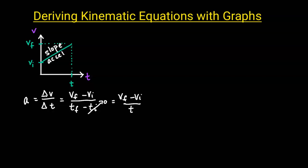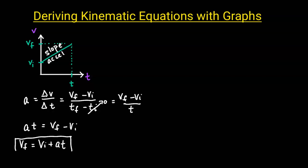If we move time over to the left, we get AT equals V final minus V initial. Solving for V final: V final equals V initial plus AT. This is our first kinematic equation.